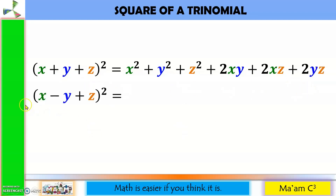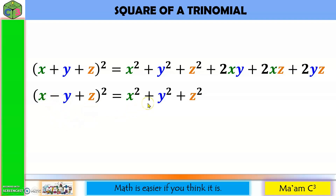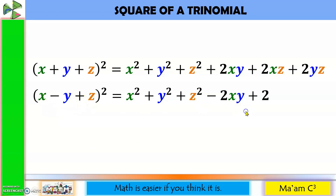Let's try this one. Let us square each term in the trinomial: x squared plus y squared plus z squared. Even though this is negative, when you square it, it will still be positive. Let's get a pair: x and y — positive times negative is negative, so this will become negative 2xy. Another pair, x and z — positive times positive is positive, so this will be plus 2xz. Last pair — negative times positive is negative, so negative 2yz.